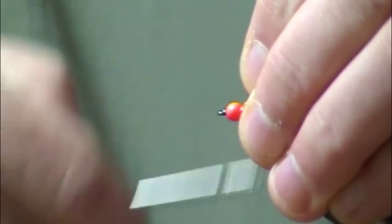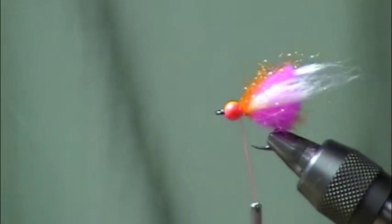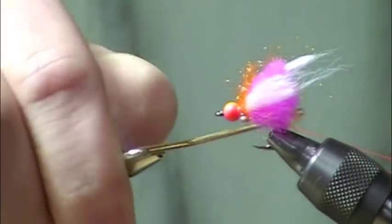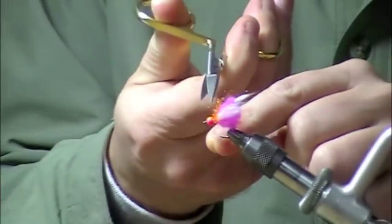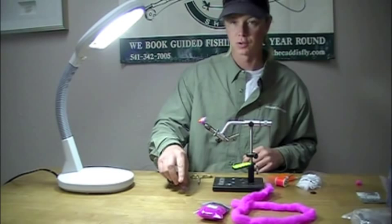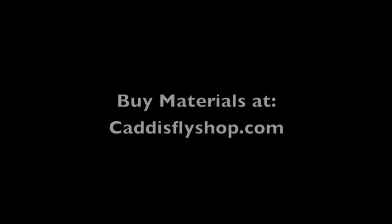I'm just going to take the thread, make a bunch of wraps behind the bead to jam it just a bit. And just whip finish right there behind the bead. Real easy fly to tie. One of my favorites. Hope it's one of yours too.